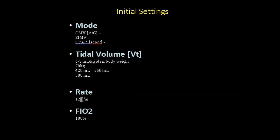For rate, we usually start between 12 to 20 breaths per minute. For FiO2, it's easy to start at 100% on somebody you just put on the ventilator because they're usually pretty sick. Then take it down as soon as you can — we like to get people down to 60% FiO2 as soon as possible to reduce risks associated with prolonged time at high FiO2, which can be damaging to the lungs.